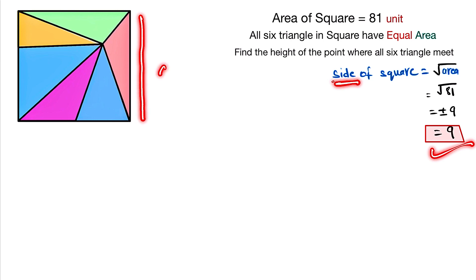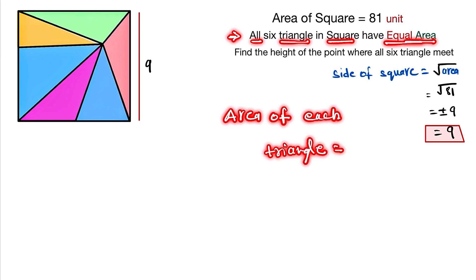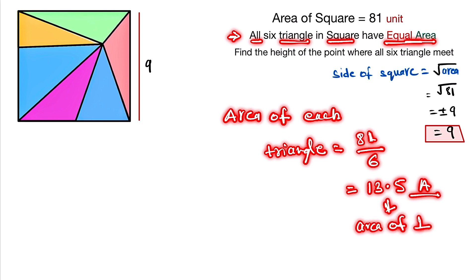Now, it is given that the 6 triangles in the square each have equal area. So the area of each triangle is given by 81 divided by 6, which equals 13.5. The area of each triangle is 13.5.